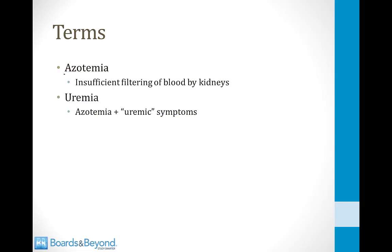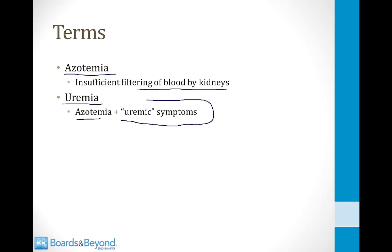Azotemia is a general term meaning insufficient filtering of the blood by the kidneys. Uremia technically means urine in the blood — that's when someone has azotemia plus uremic symptoms.